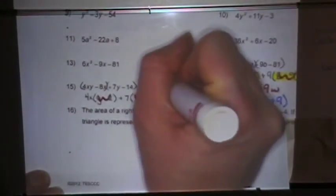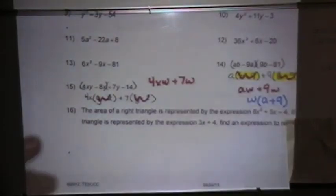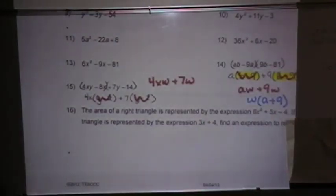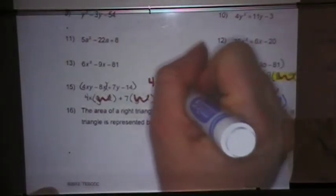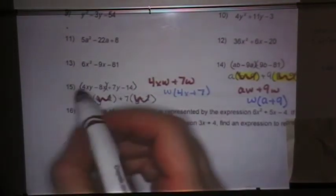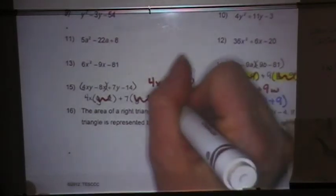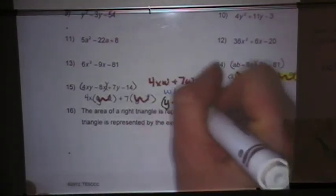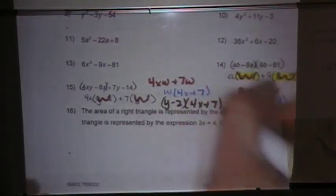So I have 4xw plus 7w. Factoring out my w, 4x plus 7 is what will be left inside. Now remember, w isn't really w, but over here it was y minus 2. And that's it. That is how you factor by grouping.